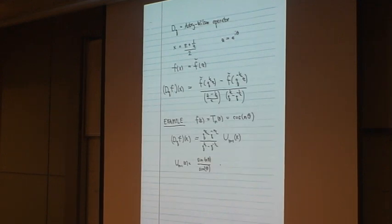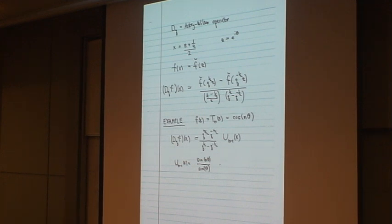What's the Q derivative operator? It's the Askey-Wilson operator. It's this operator that is related to orthogonal polynomials. And here it is. It has kind of a funny definition. You think of X as cosine theta, and you take this divided difference in terms of e to the i theta. You can see that it does act like a derivative. It reduces degrees of polynomials by one. You can explicitly find it on these Chebyshev polynomials. So it's some kind of a derivative type of thing.